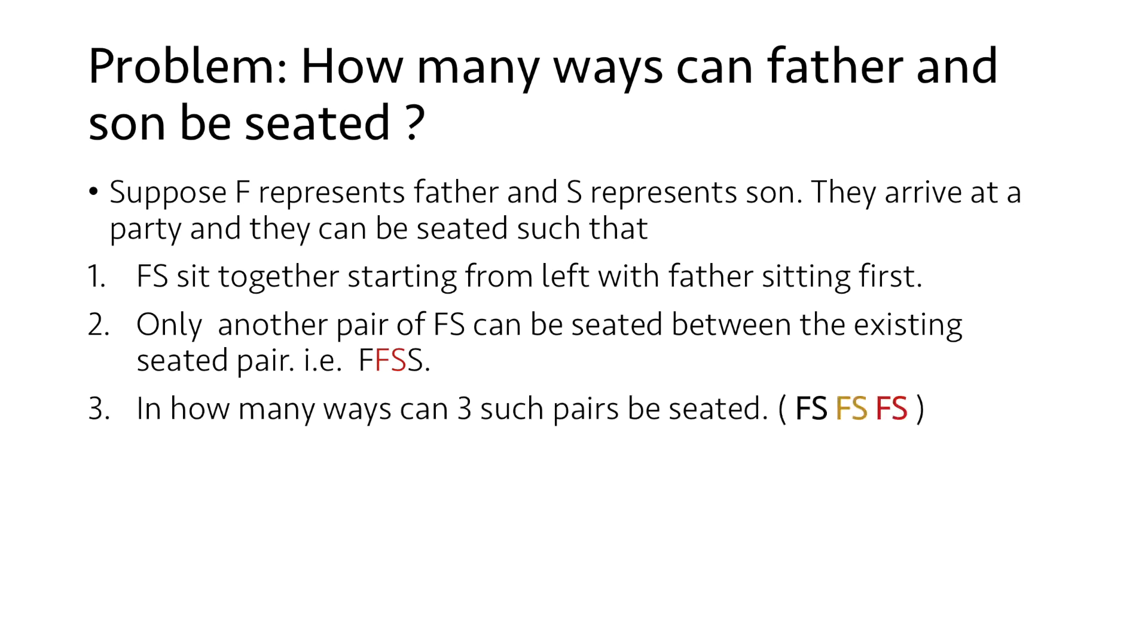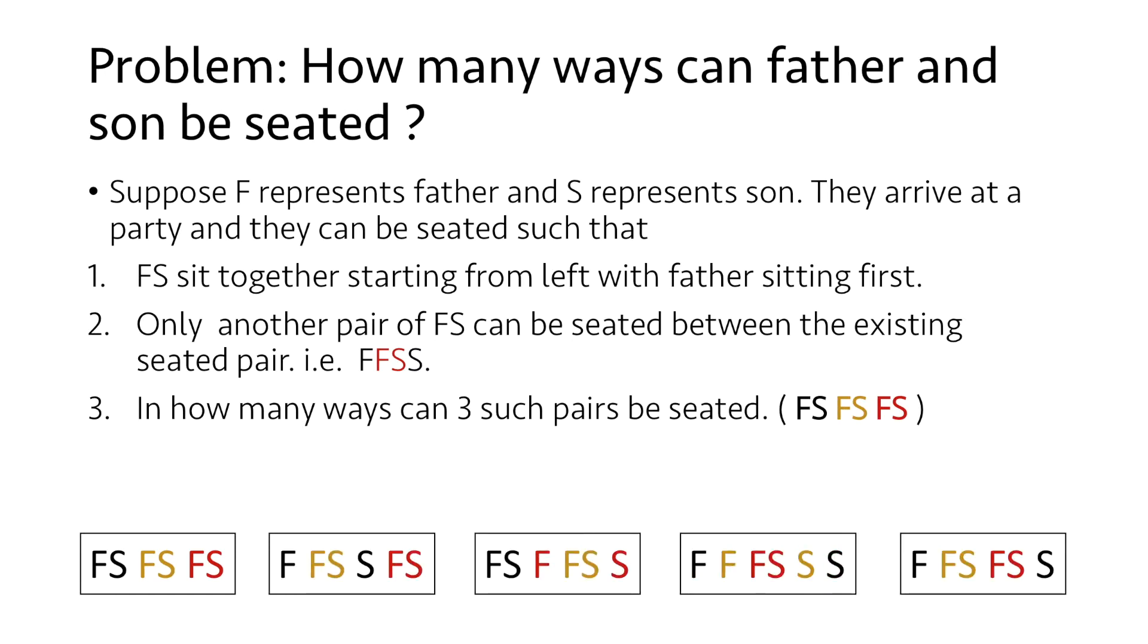Now let's say we need to find the ways in which 3 such pairs can be seated. If we try to arrange these 3 pairs according to the given constraints we will see that we can arrange them in these 5 possible ways. In the first case all 3 pairs are seated separately.